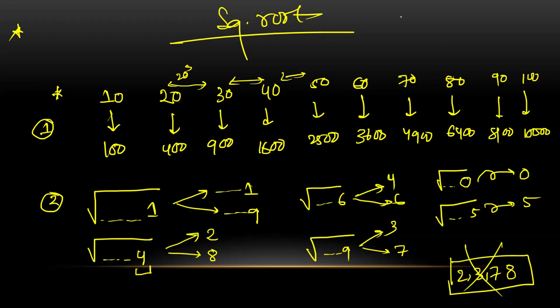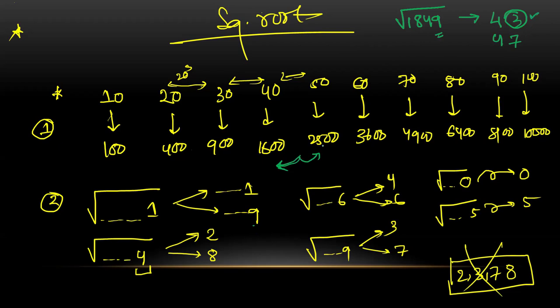Suppose the question is root of 1849. What range is it in? Between 1600 (40 squared) and 2500 (50 squared) — so it's in the forties, first digit is four. Unit digit is nine, so possibilities are three or seven: giving 43 or 47. Is 1849 closer to 1600 or 2500? It's closer to 1600, so the number is smaller — the answer is 43, not 47.